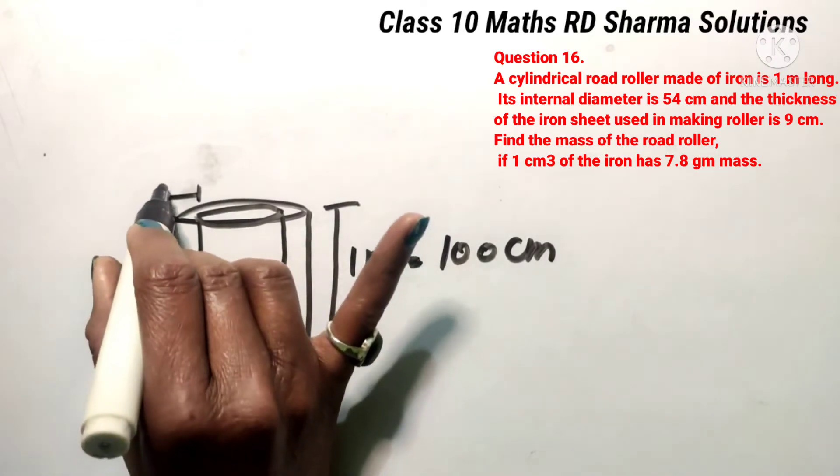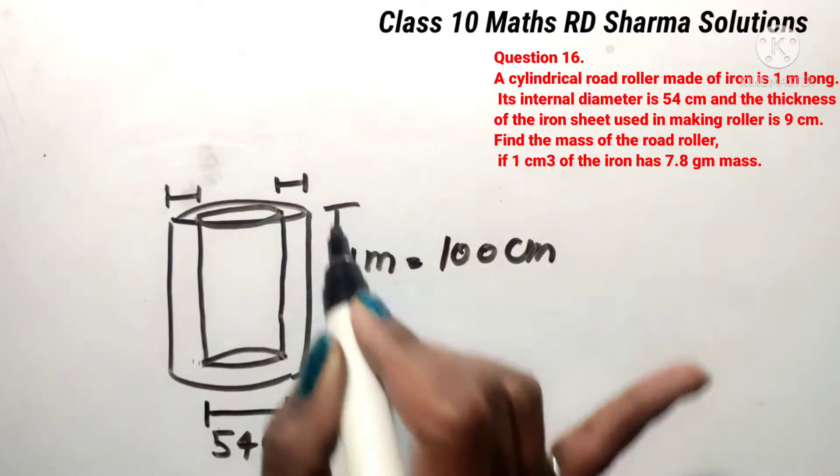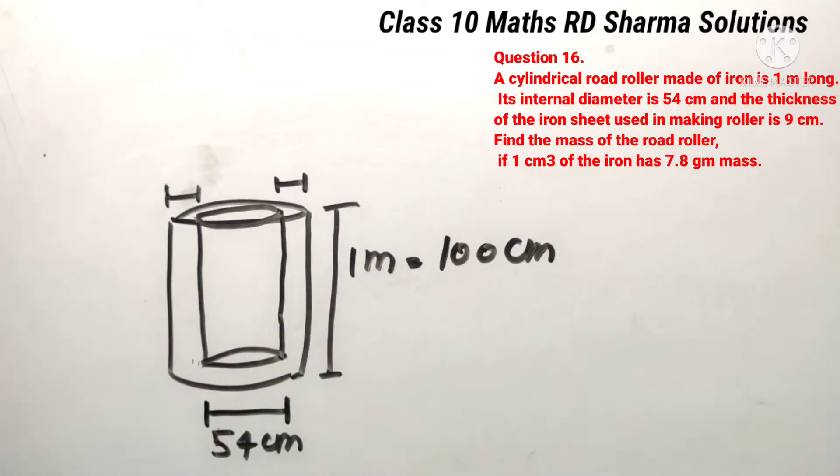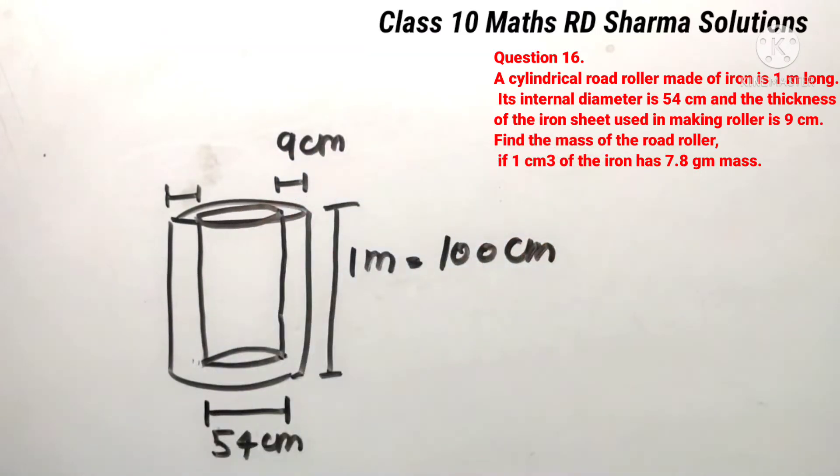From here to here, the sheet is made of 9 cm. So if this is 9 cm, then you can convert it in the meter. Actually, we need everything in centimeter. So, if we leave the 9 cm, then it is all centimeter. So, here we do 9 cm. So, this is the thickness.